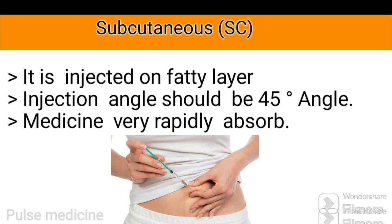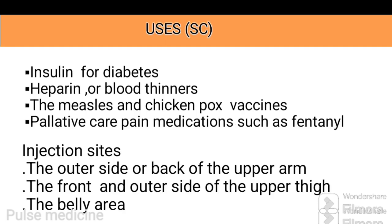You also need to be aware of using a target site that has already been used heavily. Subcutaneous injection is used for insulin for diabetes, heparin or blood thinners, MMR and chickenpox vaccines, and palliative care pain medications such as fentanyl. Injection sites are the outer side or back of the upper arm, the front and outside of the upper thigh, and the belly area.